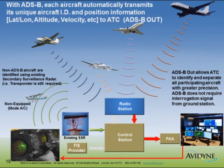With ADS-B, each aircraft equipped with ADS-B out is going to transmit their aircraft ID, latitude, longitude, altitude, and velocity to ATC. That's ADS-B out, and it's going to allow ATC to identify and separate all participating aircraft. Notice that ADS-B doesn't require an interrogation signal in order for you to reply — everybody is just broadcasting their position. It's automatic broadcast — we're all squirting out our position information once a second.